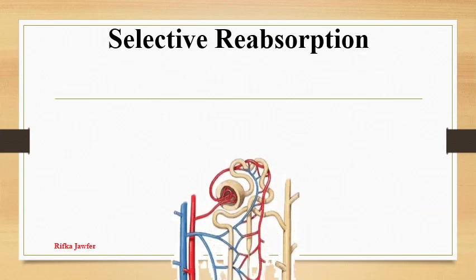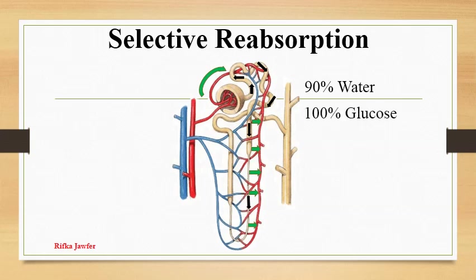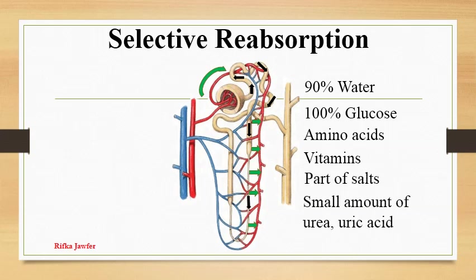Selective reabsorption: Most of the constituents are absorbed again into the blood capillaries while the glomerular filtrate moves along the nephron. 90% of water, all the glucose, amino acids, vitamins, part of the salts, a small amount of urea and uric acid, and drugs are reabsorbed. The composition of the glomerular filtrate changes and becomes urine, which is released to the collecting ducts and then to the pelvis.